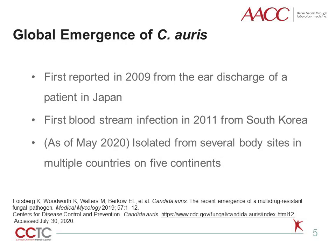C. auris was first reported in 2009 from the ear discharge of a patient in Japan, and the first documented bloodstream infection was in a South Korean patient in 2011, who had persistent fungemia while on fluconazole and amphotericin B. As of March 2020, the organism has been isolated from several body sites in multiple countries on five continents. In Sub-Saharan Africa between 2010 and 2013, C. auris was the most common cause of hospital-onset fungemia, consisting of 38% of all fungemia.